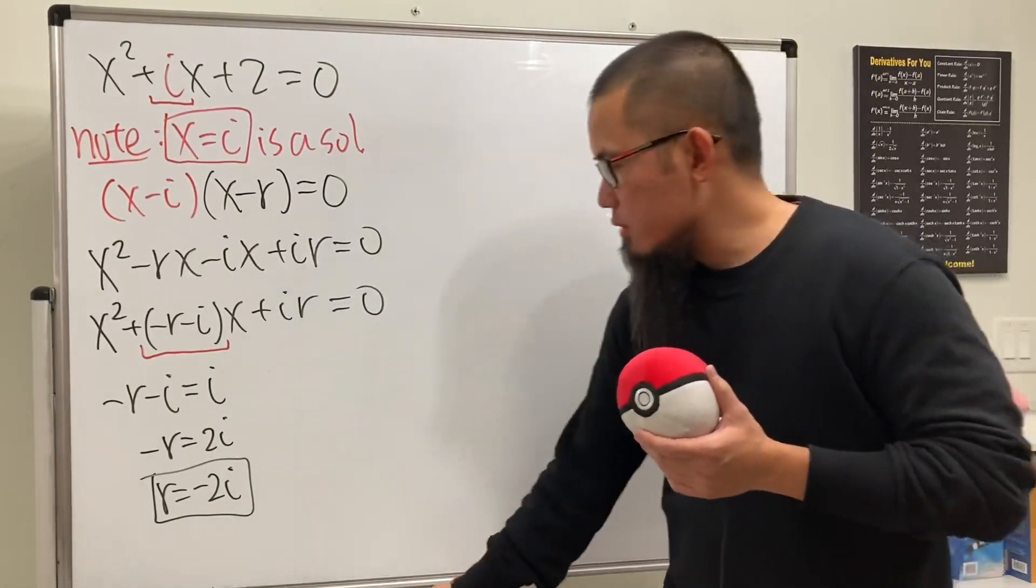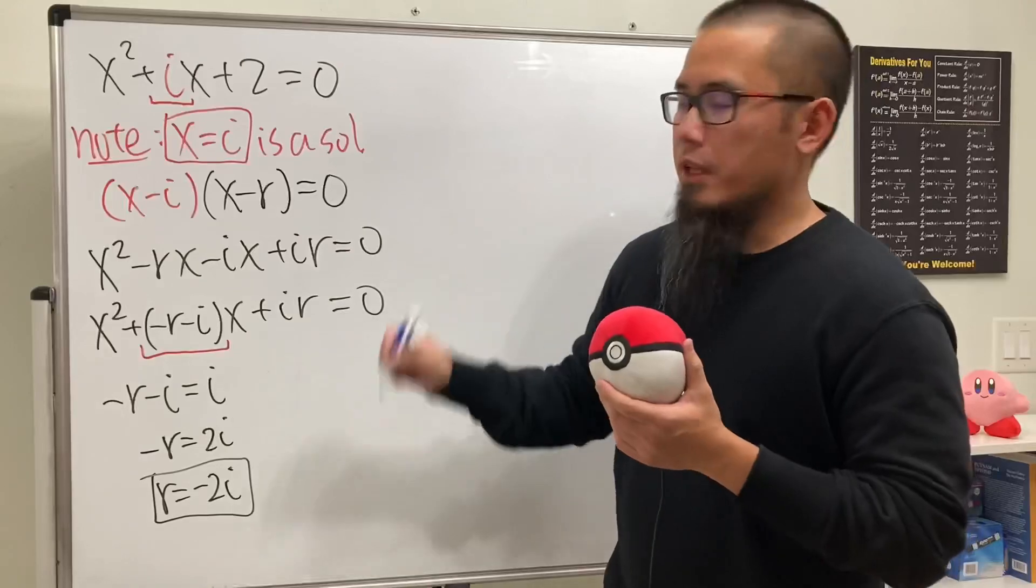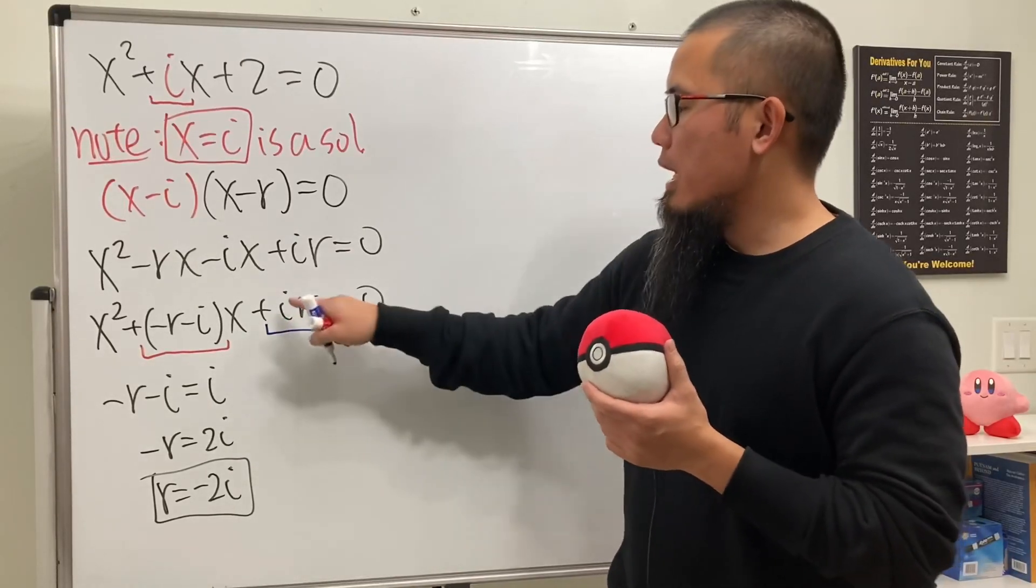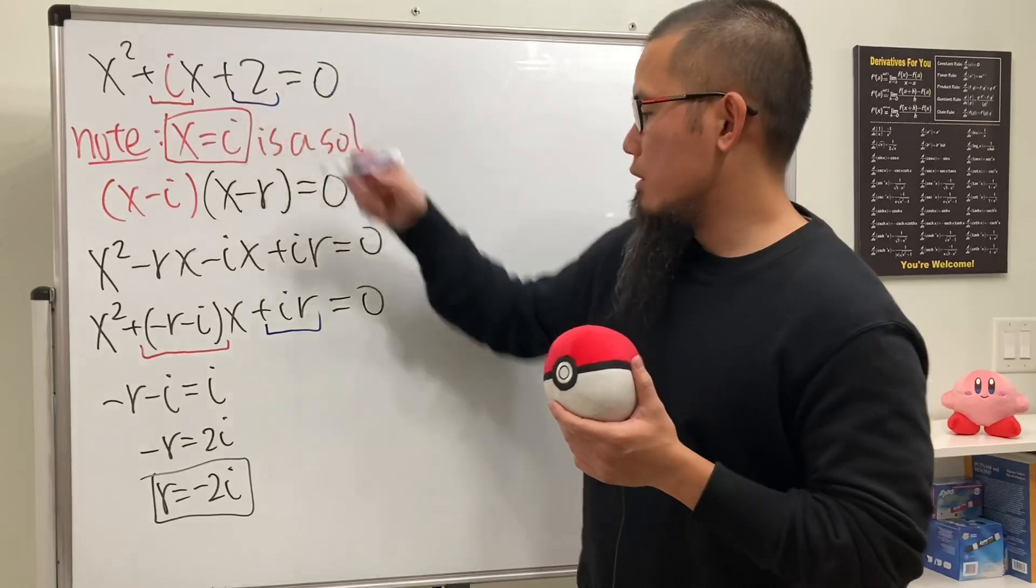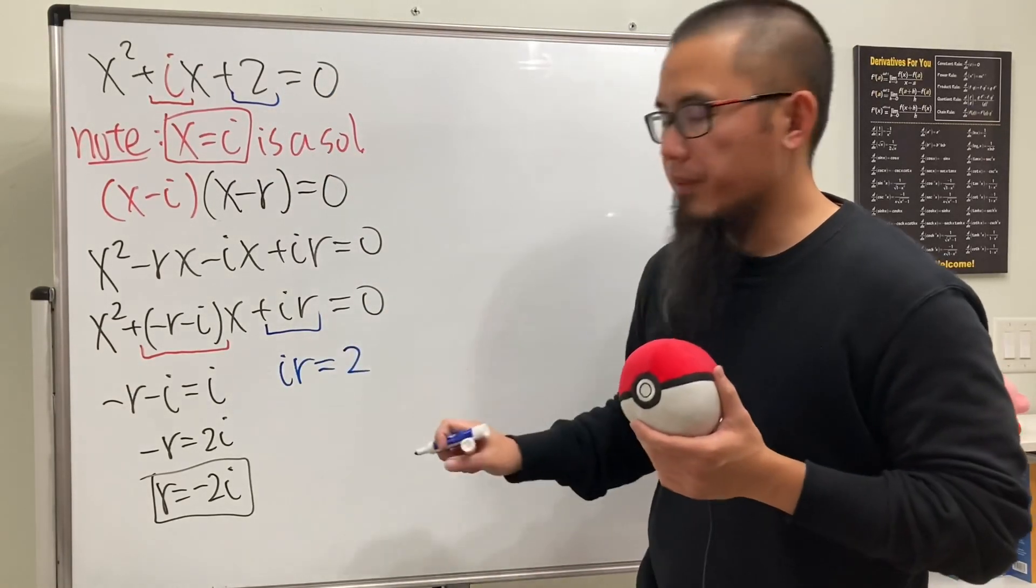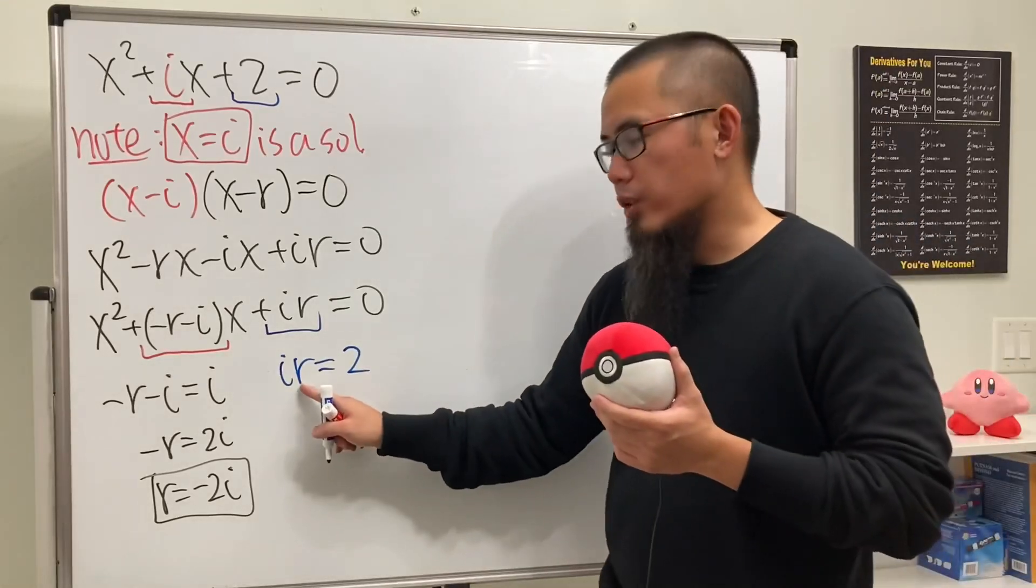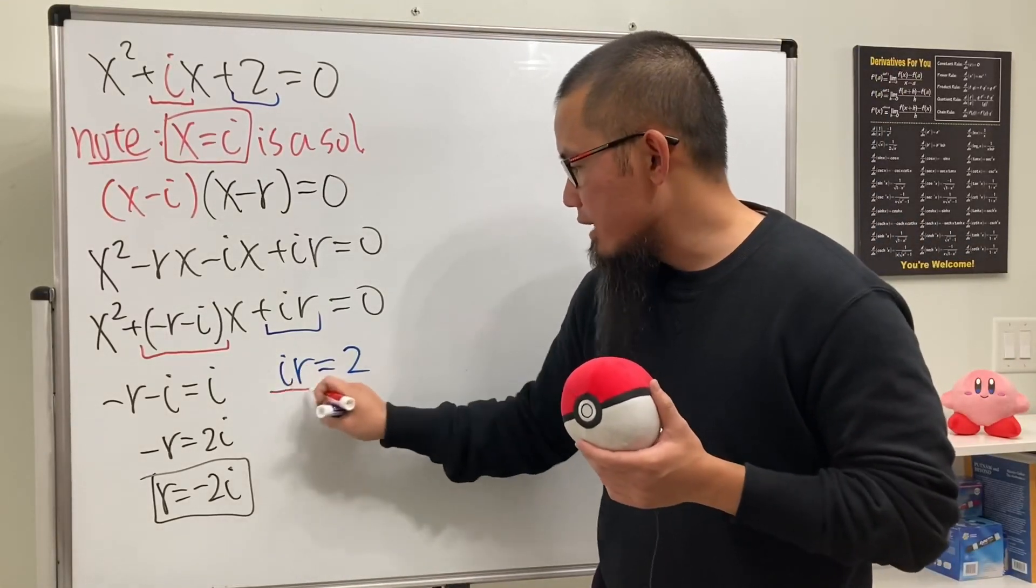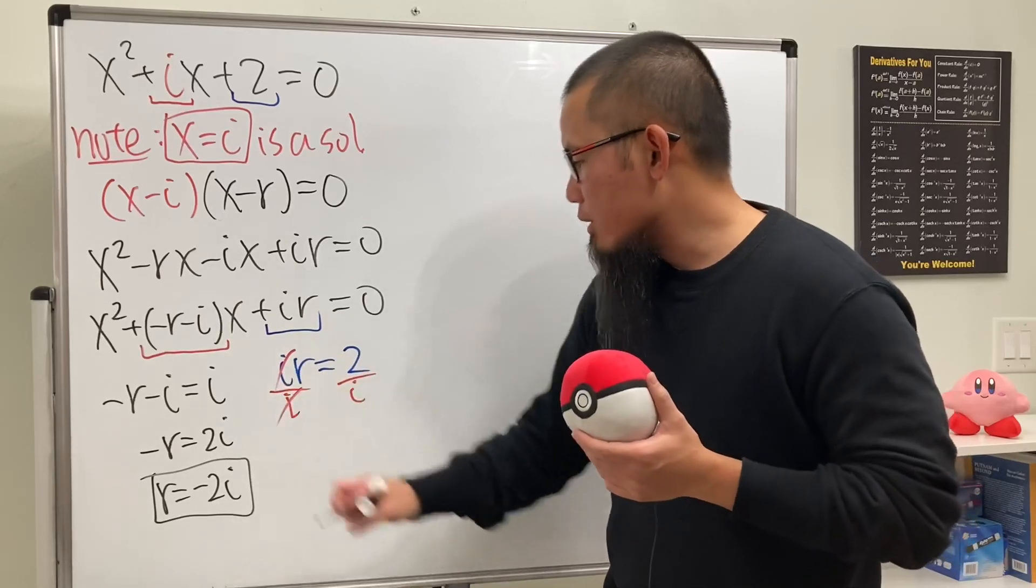Or you could have also used this right here. Compared with the constant term, ir has to be 2. So let's go ahead and do that. We get ir equals 2. And keep in mind, we're trying to get r by itself. So divide by i on both sides. Cancel this out.